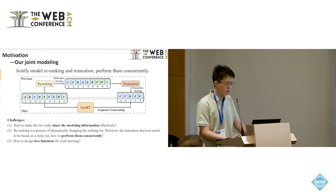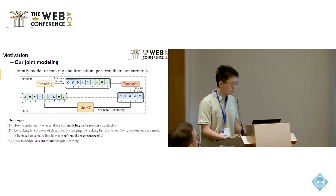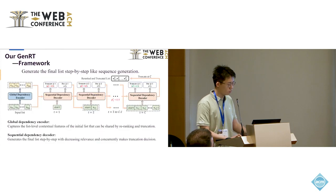The specific challenges to achieve it are: first, how to make the two tasks share the modeling information effectively. Second, re-ranking is a process of dynamically changing the ranking list. However, the truncation decision needs to be based on a static list. So, how to perform them concurrently. And third, how to design the loss functions for joint learning of these two tasks.